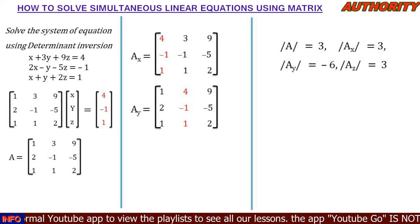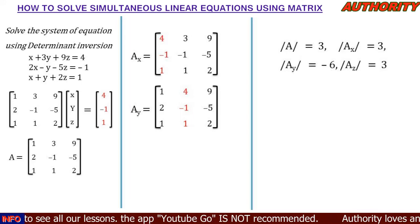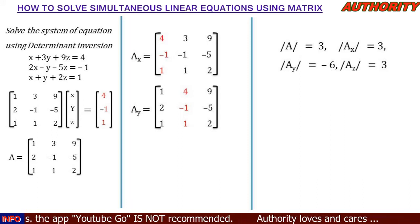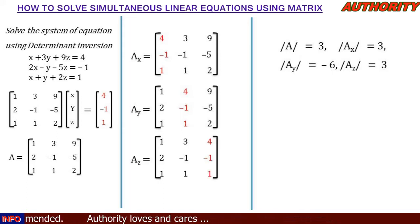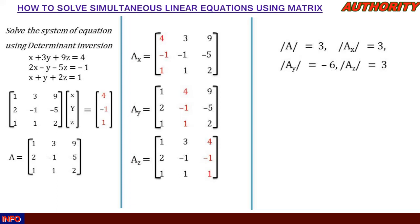Finally, form matrix Az by replacing the third column [9; -5; 2] with the constant [4; -1; 1]. So matrix Az = [1, 3, 4; 2, -1, -1; 1, 1, 1]. The determinant of matrix Az equals 3.